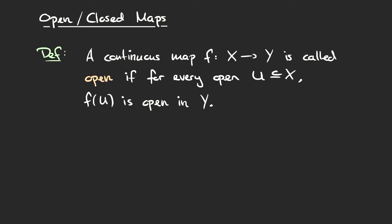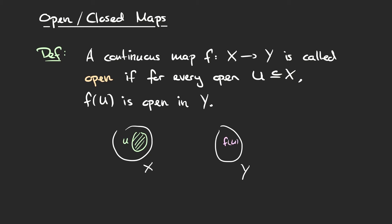Let's get started with the definition. We call a continuous map f from a space X to a space Y open if every open subset U of X is mapped to some open subset f(U) in Y. We have some space X and some space Y, and we pick any open subset U — this green set — and this will be mapped to some set f(U) in Y, which I'll draw in pink.